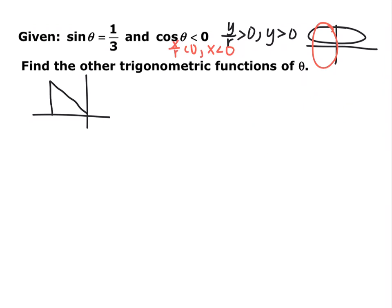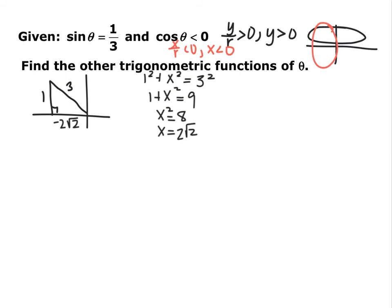Since sine is y over r, the y coordinate is 1 and the radius is 3. To find the x coordinate, use the Pythagorean theorem on the right triangle — pause and do that now. You should end up with negative 2√2. Make sure to keep the negative since we're in quadrant two; a lot of times that negative gets dropped. Now you have x equals negative 2√2, y equals 1, and r equals 3. Pause and find the other five trig functions.